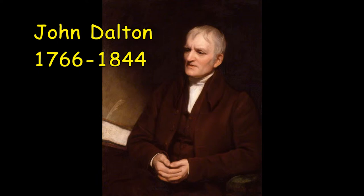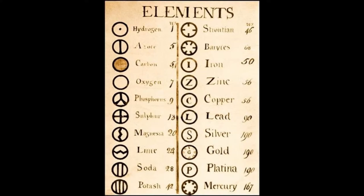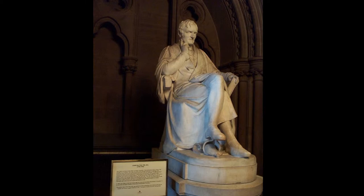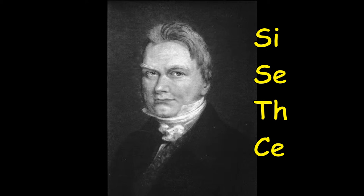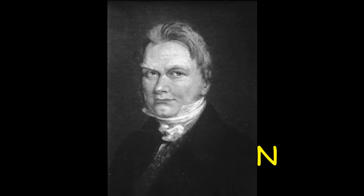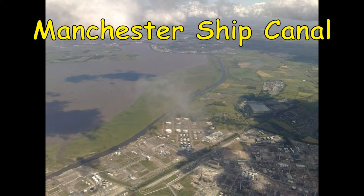I mention in passing two visionaries. English Quaker schoolteacher John Dalton published his famous work on atomic theory in 1805. It inspired the search for new elements. In his book he published a list of existing elements and gave them some primitive alchemical symbols. His death in Manchester in 1844 was attended by a procession of 40,000 people. Swedish chemist Jöns Berzelius discovered four new elements: silicon, selenium, thorium and cerium. He was the one who decided to give each element a one or two letter symbol, the first letter being a capital.